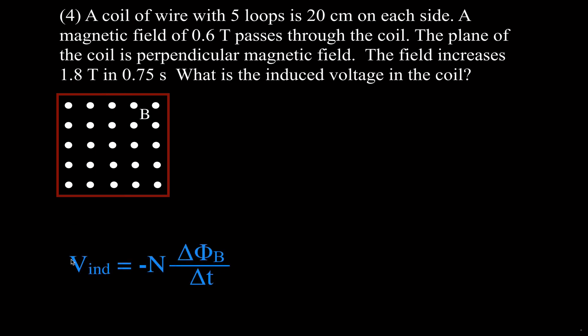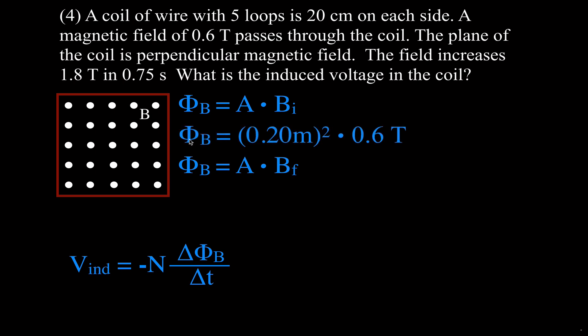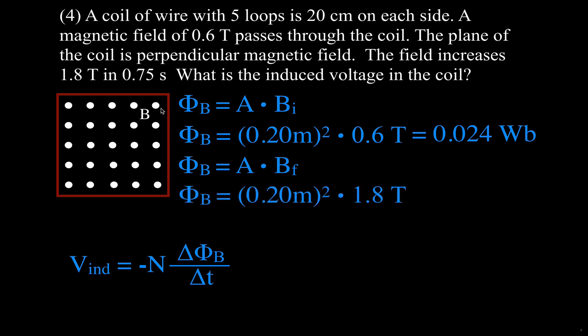Using the EMF equation with five loops, we know the time, and we calculate the flux change. The area is 0.2 meters squared (20 centimeters converted). With the initial magnetic field of 0.6 Teslas, the initial flux is 0.024 Webers. With the final field of 1.8 Teslas, the final flux is 0.072 Webers.